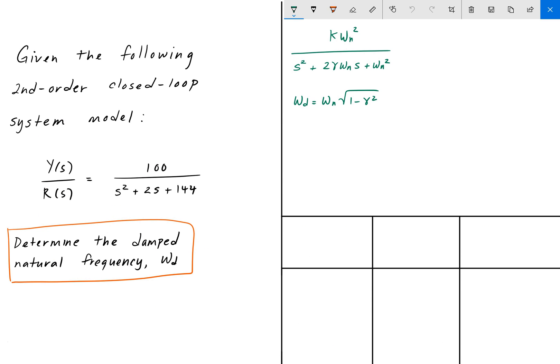So I'm going to take these equations and write them on the next page. Here I've rewritten the equations from the last page. The only difference is that instead of zeta I replaced it with gamma, just because gamma is easier to write. We can take this template of a transfer function and set it equal to our actual transfer function: 100 over s squared plus 2s plus 144. Here we can group the terms: the s squared terms, the s terms, and the constants.